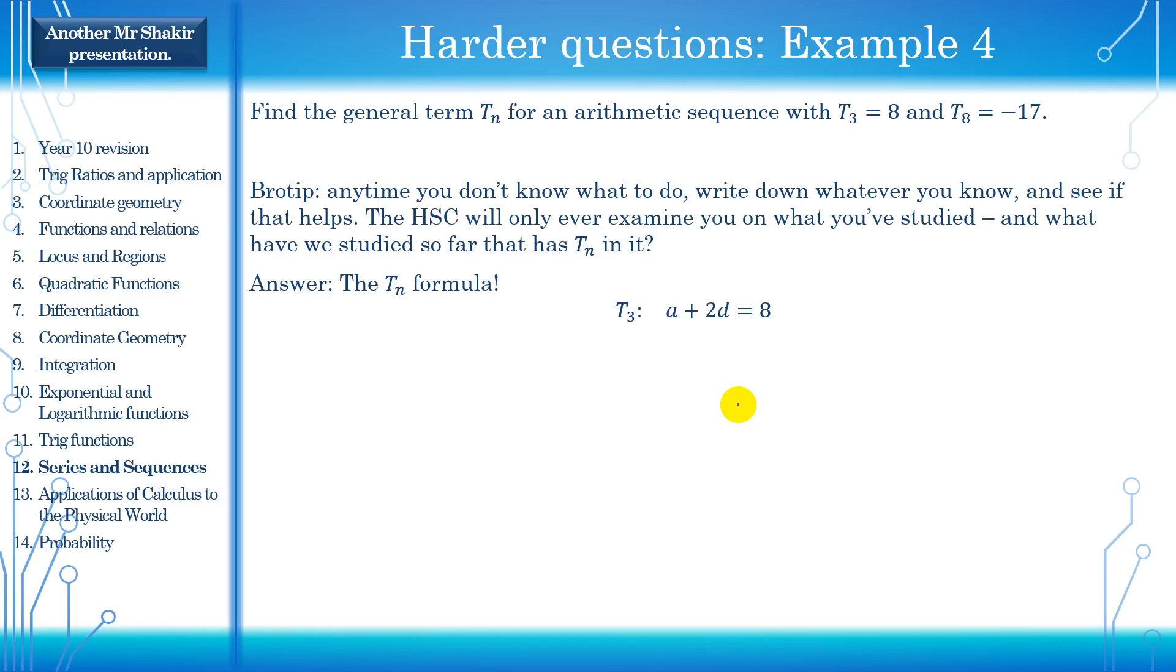Now, we know the third term is a plus 2d is equal to 8. A plus 2d, it should be a plus n minus 1. n over here is 3. So 3 minus 1, which is 2. So a plus 2d is equal to 8. We know it's equal to 8 because they've told us the third term is 8. The formula for the third term is that, and it's equal to 8. And we'll do something similar for the eighth term. The formula for it is a plus 7d, and it is equal to 17. Now, you have two equations and two variables. And it's clearly a simultaneous equation.